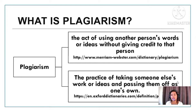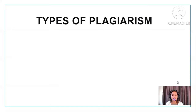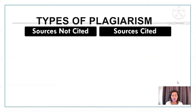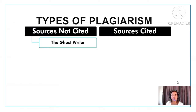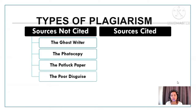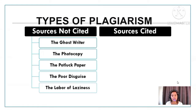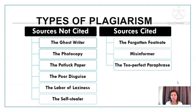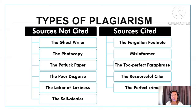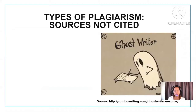There are two types of plagiarism. The first is where the source is not cited, which includes: the ghostwriter, the photocopy, the potluck paper, the poor disguise, the labor of laziness, and the self-stealer. The second is where sources are cited but the work is still plagiarized, which includes: the forgotten footnote, the misinformer, the too perfect paraphrase, the resourceful citer, and the perfect crime.